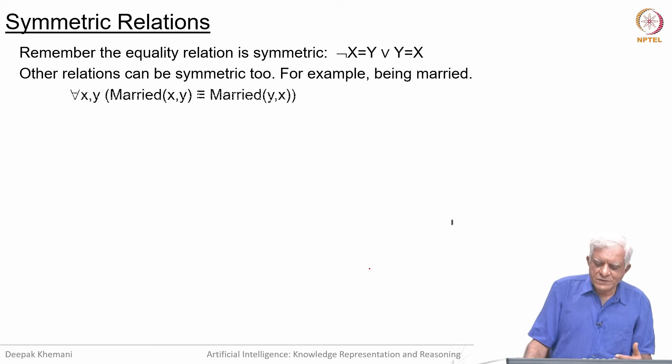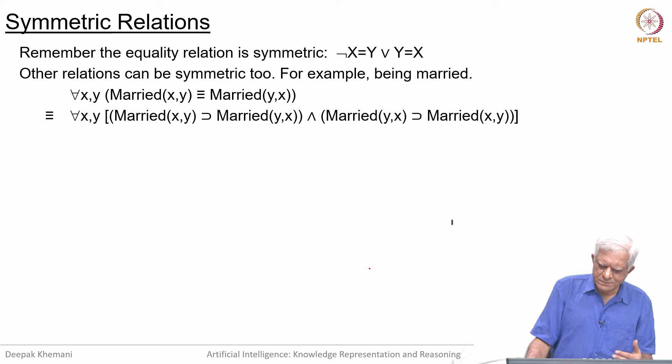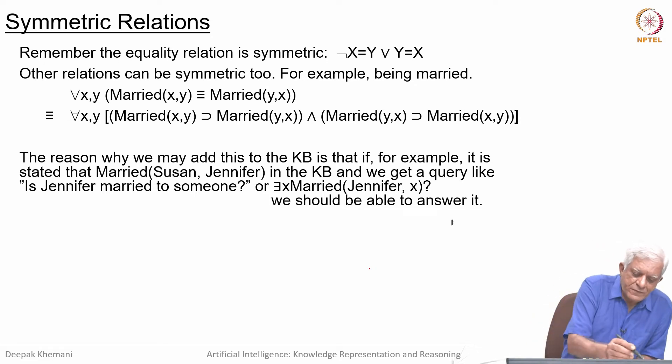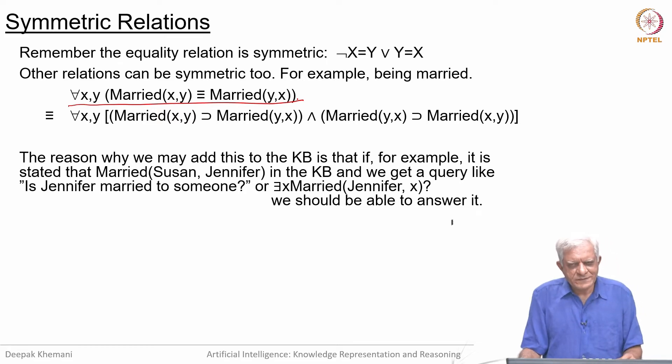Other relations can be symmetric too. For example, being married is a symmetric relation: if x is married to y, then y is married to x. We can break this into two implications, but that is redundant because these are variables. The reason we may want to add this knowledge is that the knowledge base may contain only one direction. For example, it may state that Susan is married to Jennifer in the knowledge base.